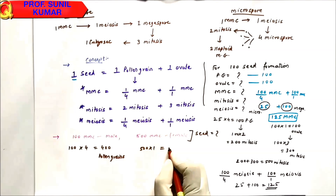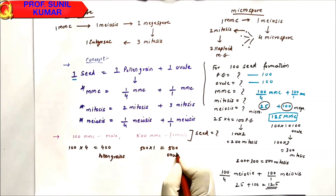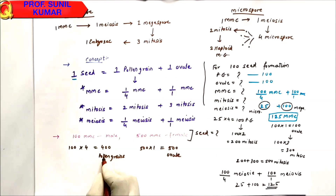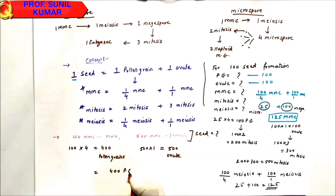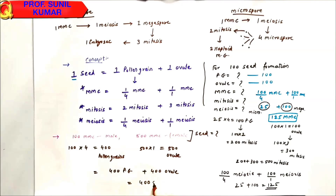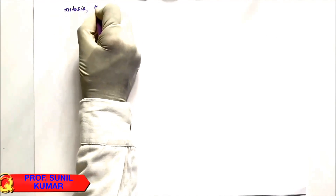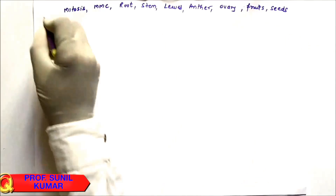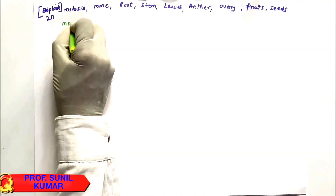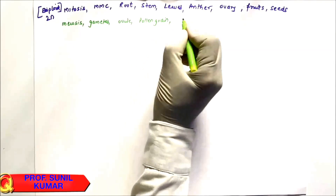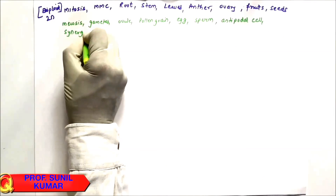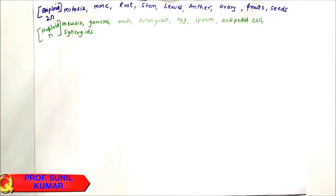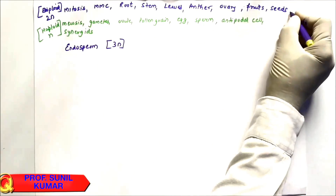The rule is: for one seed you need one pollen grain and one ovule. We have 400 pollen grains and 500 ovules, so 400 pollen grains + 400 ovules → 400 seeds are formed. Key ploidy concept: words like mitosis, MMC, root, stem, leaves, anther, ovary, fruit, seeds → all are diploid (2n). Words like meiosis, gametes, ovule, pollen grain, egg, sperm, antipodal cells, synergids → all are haploid (n). Endosperm is always 3n (triploid).